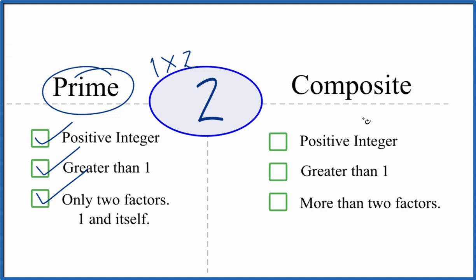Let's see if it's a composite number. For a composite number, it needs to be a positive integer greater than 1, but we need to have more than 2 factors. And when we look at 2, we only have 2 factors. So 2 can't be a composite number based on our definition.